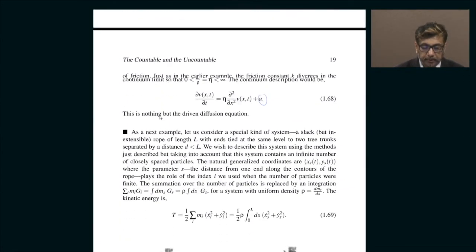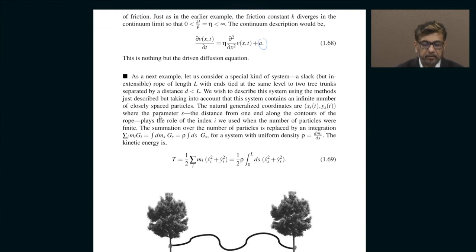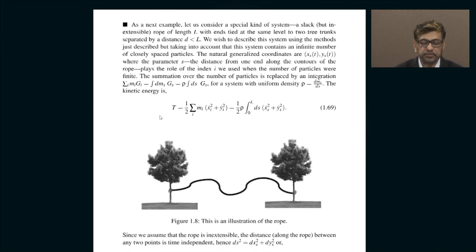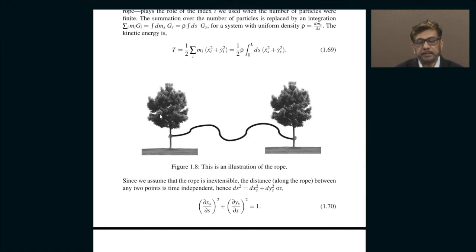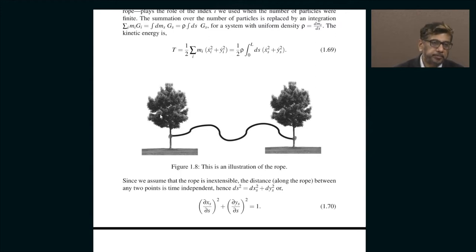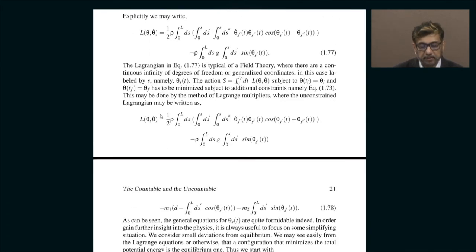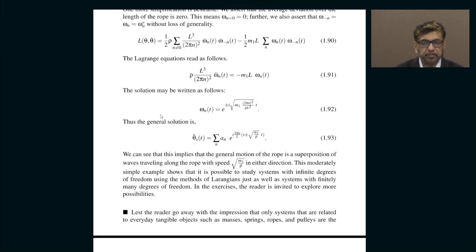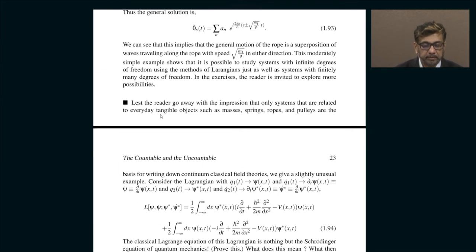Now let us proceed to another example which is slightly more complicated and less illuminating compared to the first two. I am going to skip the example of a slack rope tied between two poles — it is more technical than illustrative, and you can easily get lost in the details. You can look at it on your own.